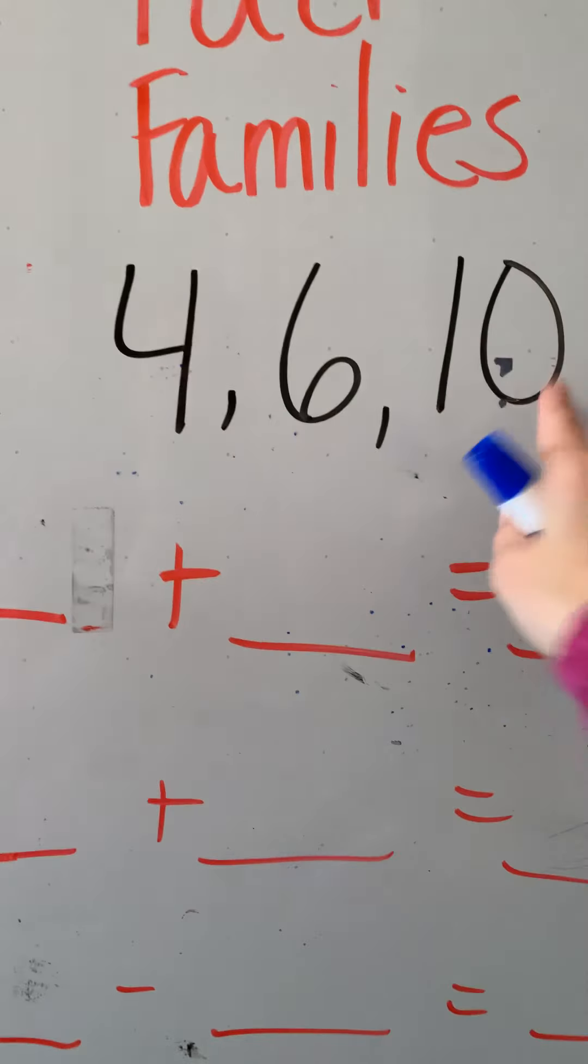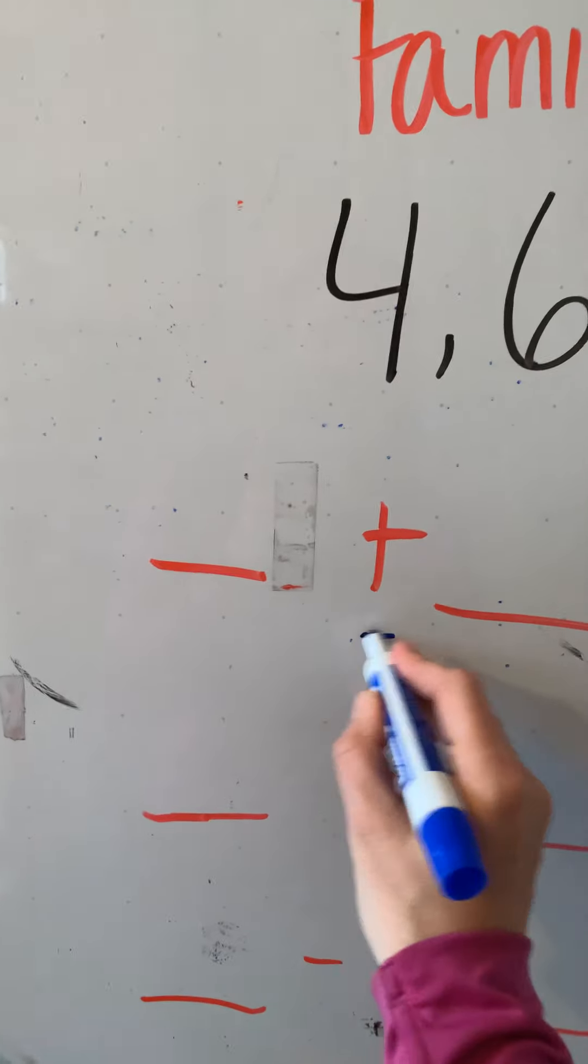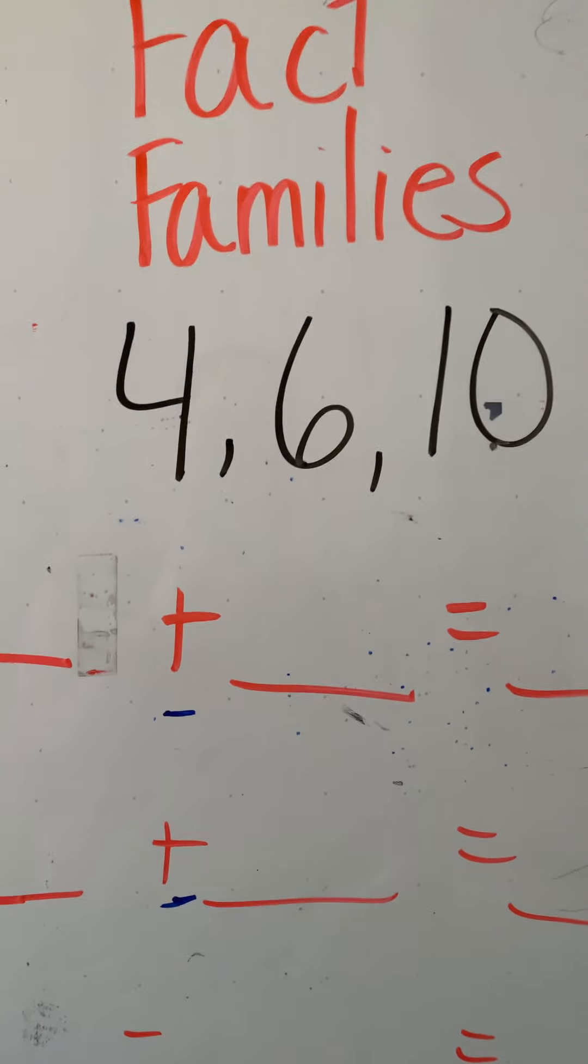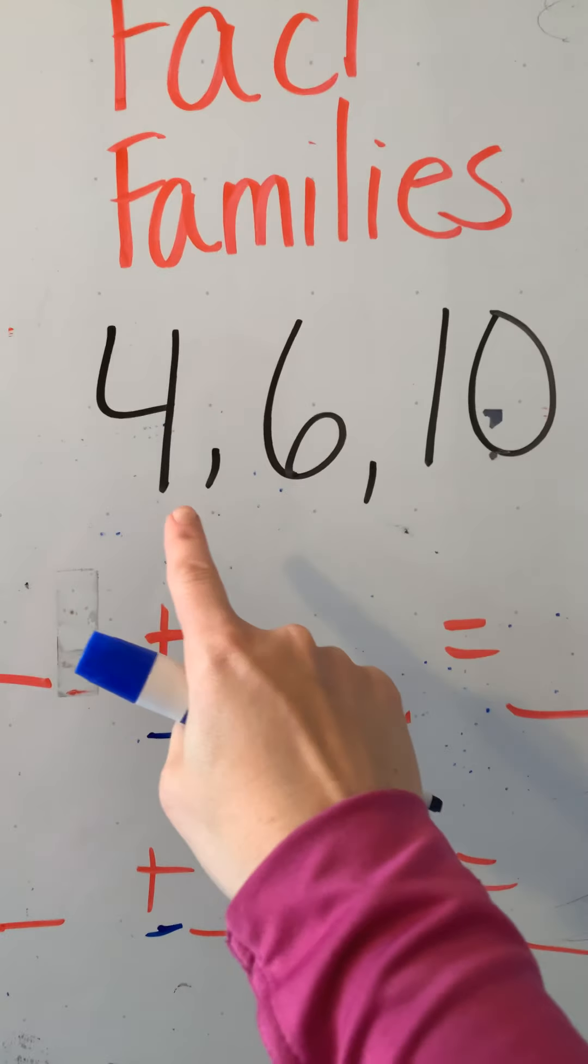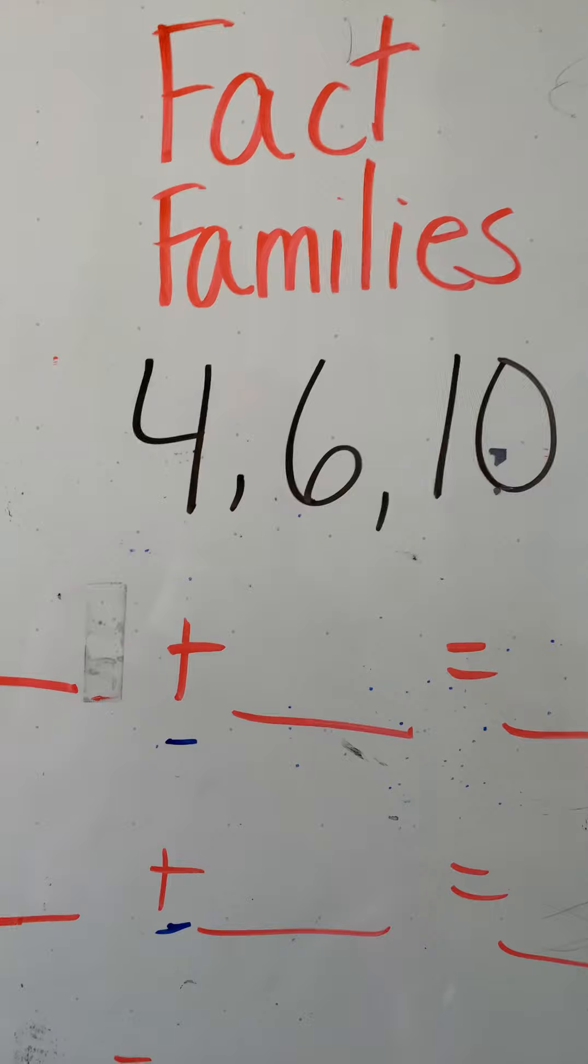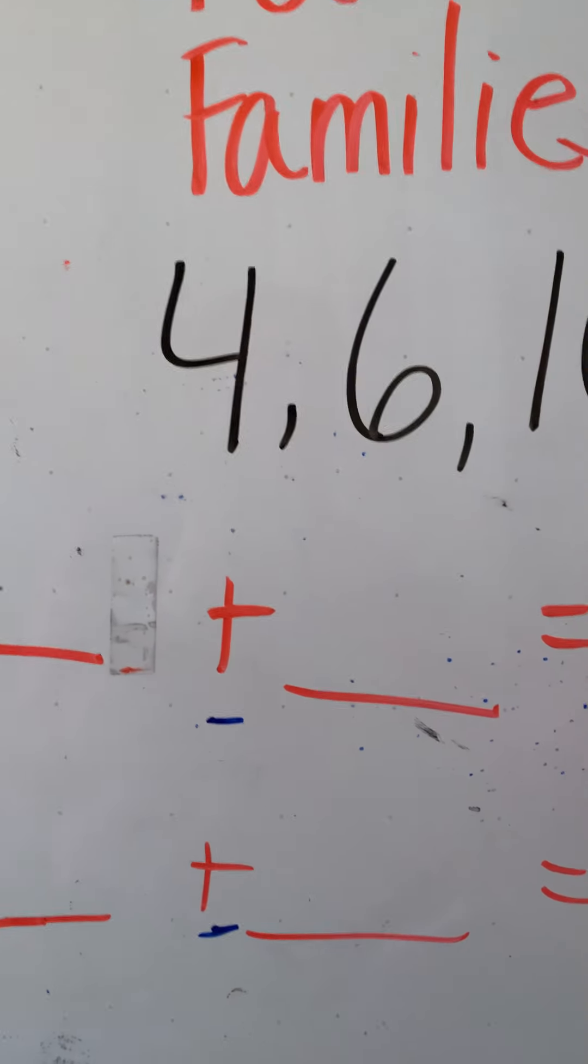So remember, we have three numbers, and we know, take a look. We know addition ends with the biggest number. So which is our biggest number here, 4, 6, or 10? And I hear Emily saying 10, 10, 10. So get those 10s right there.